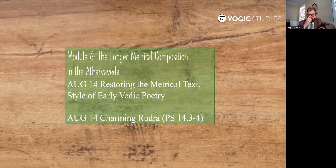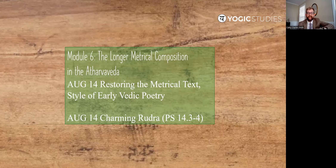Module six, the longer metrical composition in the Atharva Veda. Here we'll talk about features of the Atharva Veda that are really more relevant to the Rig Veda — the style of the more complex, high-register poetry. We'll have an example of one of the earliest pieces of what we might call Shiva poetry: it's begging the terrifying deity Rudra to be Shiva — that is, to be civil to us.